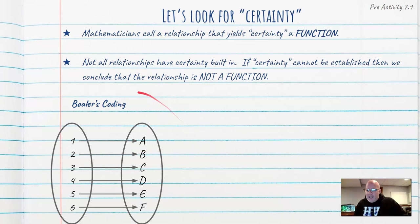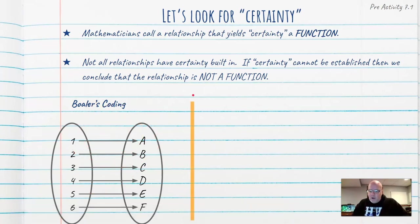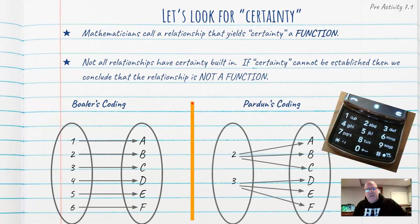So let's look at the code that Dr. Joe Bowler gave you. A one mapped to the letter A, a two mapped to the letter B, and so on. There was certainty in Bowler's coding. In the code that I gave you, the number two could be mapped to either an A, B, or C.